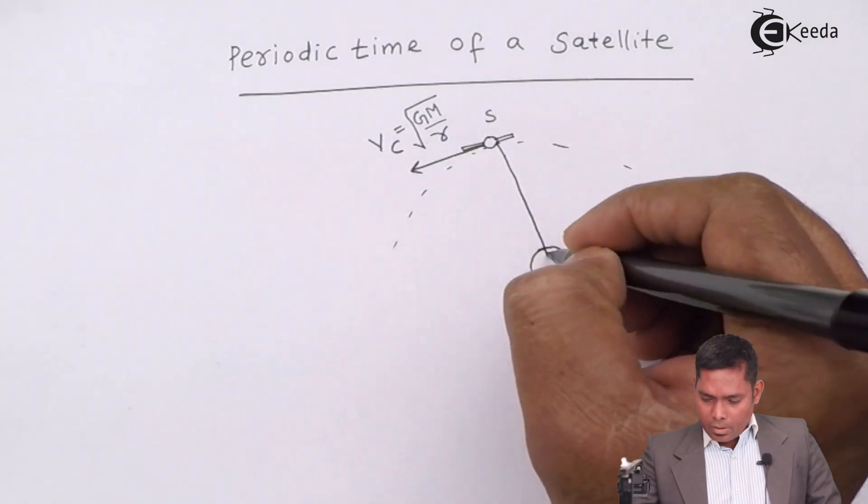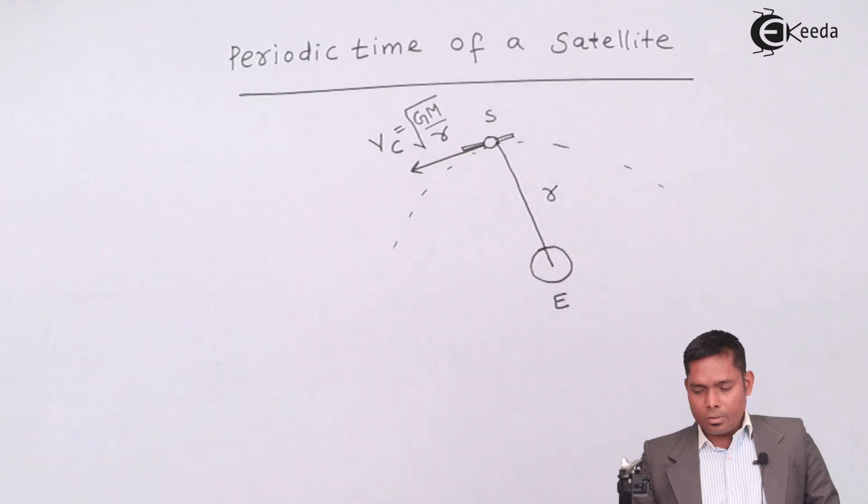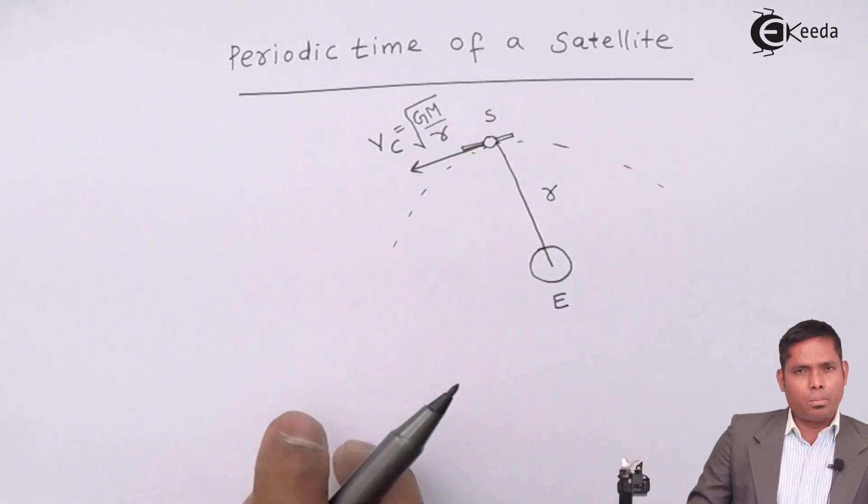And this one is the small r, the orbital radius from the center of the planet.